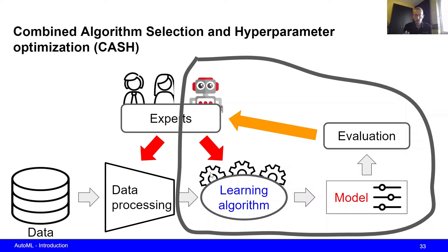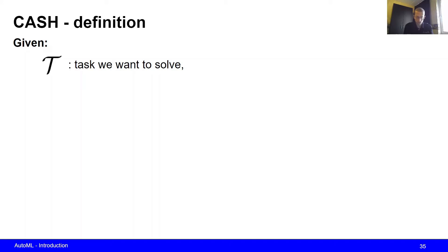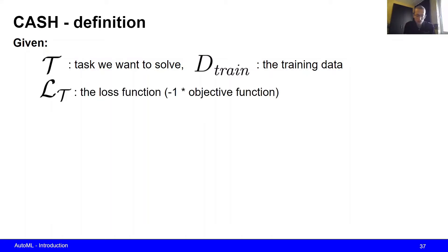Let's try to formalize the problem of selecting the best algorithm as well as the best hyperparameters. Suppose we are given some task that we want to solve, and some training data to allow the machine learning method to find a solution. Every AutoML system needs a performance metric — we often use the loss function, which measures how poorly our solutions are performing — and we also need a search space. We want to find the best algorithm and the best hyperparameters, so they have to be present in our search space.